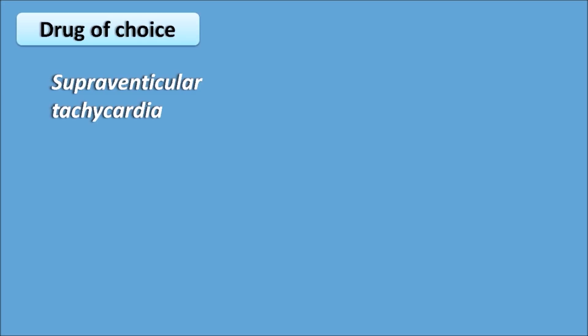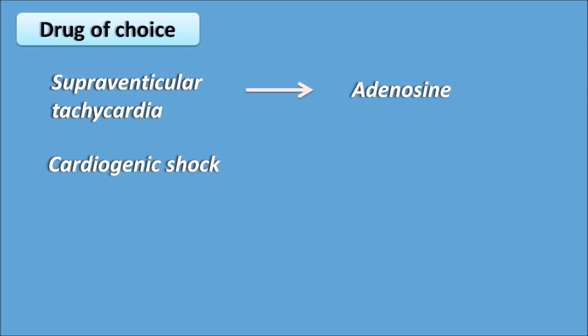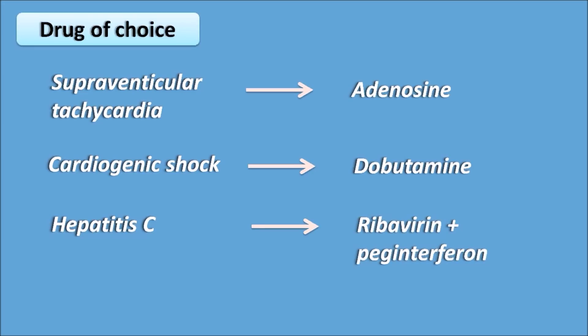For example, for supraventricular tachycardia, adenosine is a drug of choice; for cardiogenic shock, dobutamine is a drug of choice; and for hepatitis C, ribavirin plus peginterferon is used. List out what drugs are used as drug of choice in particular conditions — concentrating on these will help you get a good score.